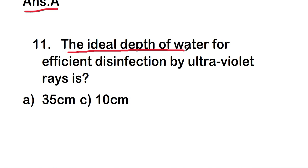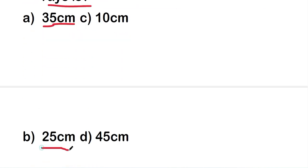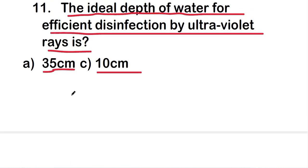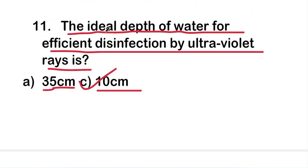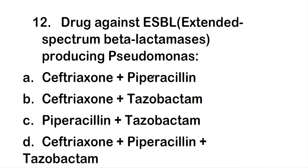The next question: the ideal depth of water for efficient disinfection by ultraviolet rays is 35 cm, 25 cm, 10 cm, or 45 cm. The right answer is option C — 10 centimeter. The ideal depth of water for efficient disinfection by ultraviolet rays is 10 centimeters.